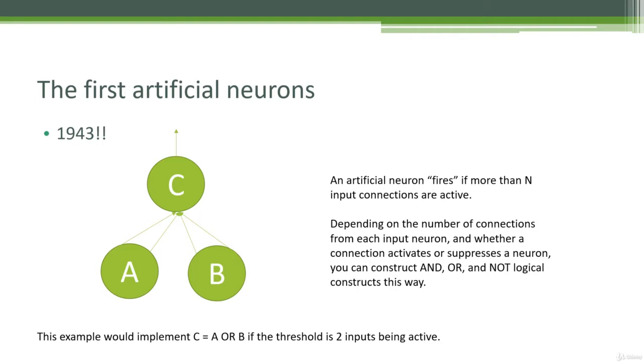People just proposed a very simple architecture where if you have an artificial neuron, maybe you can set up an architecture where that artificial neuron fires if more than a certain number of its input connections are active. And when they thought about this more deeply in a computer science context, people realized that you can actually create logical expressions, Boolean expressions by doing this. So depending on the number of connections coming from each input neuron and whether each connection activates or suppresses a neuron, that works in nature as well, you can do different logical operations.